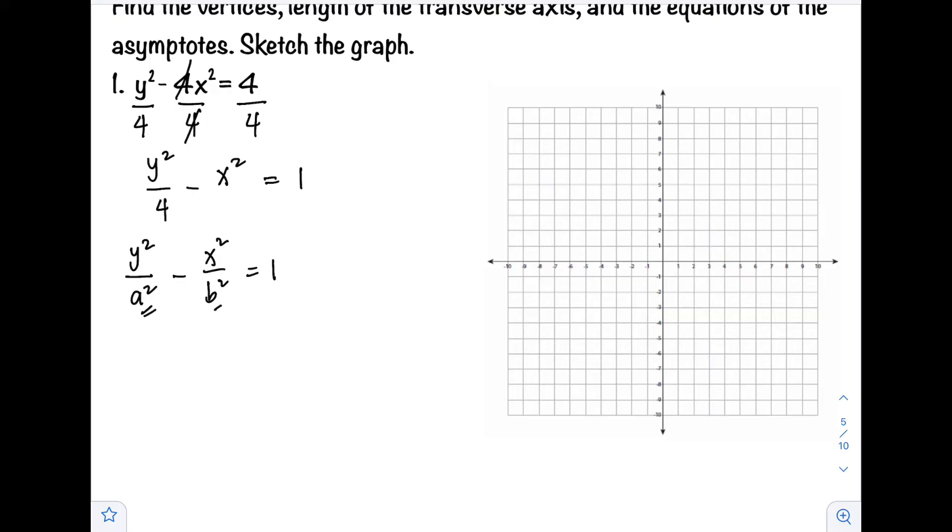After we identify the formula, solve for the values of a, b, and c. So a squared here corresponds to our 4, and solving for a, take the square root, so a equals 2.